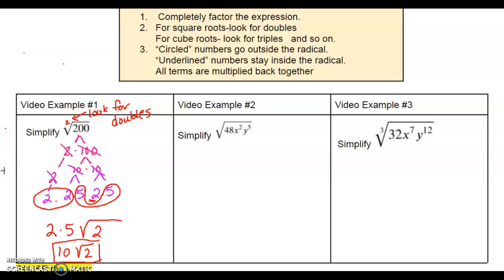No decimals — you don't want to use a calculator for the answer. If you need a calculator to help get your factors, that's fine, but no decimal answers. Let's try example number 2. You've got 48 and then some letters. Letters we're going to do separately. So we're going to find the factors of 48 and completely break it down.